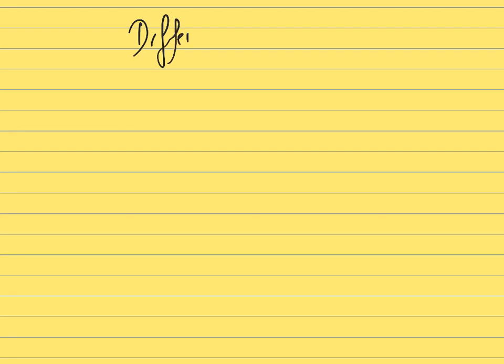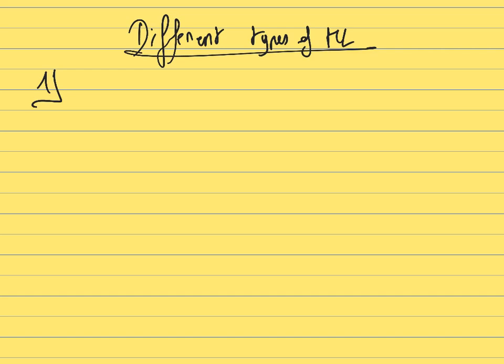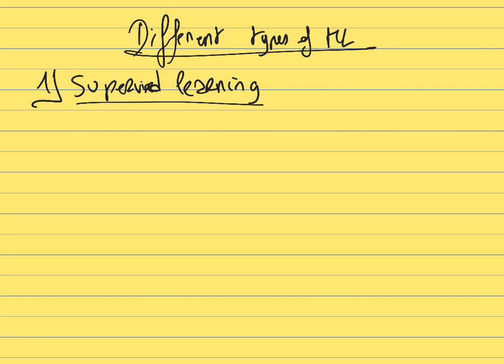Today we'll review the different types of machine learning problems. We can classify machine learning algorithms into three main families — though the boundaries aren't always fixed, and some problems may span two categories.